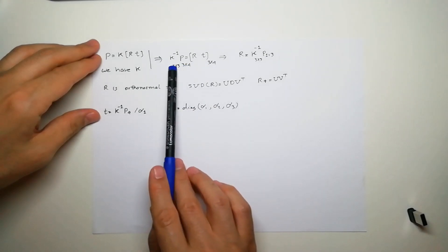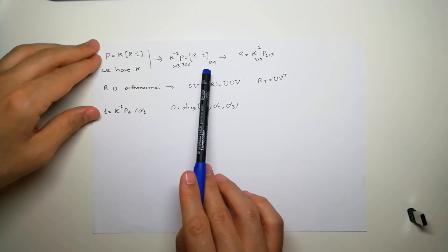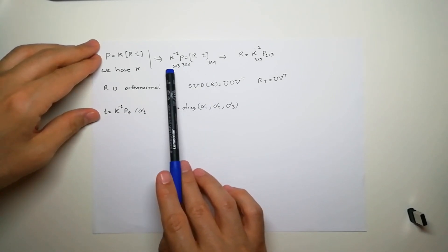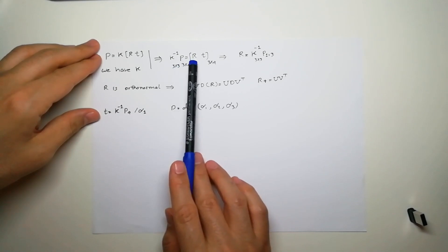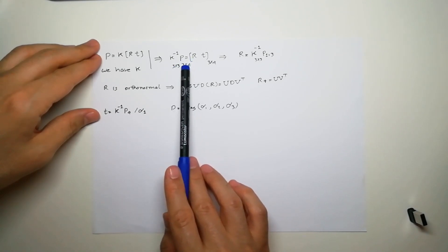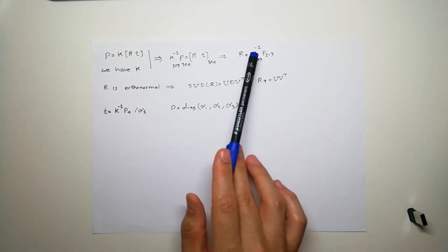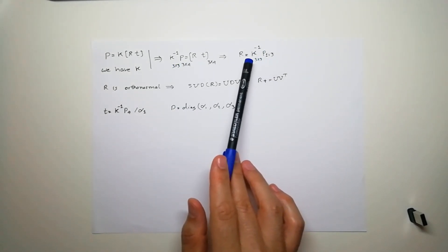This is K 3 by 3, p 3 by 4, so this is also 3 by 4. But we can't just simply say R is the first three columns and t is the last column of this matrix. We can't just simply say that because R should be orthonormal. R is a rotation matrix.